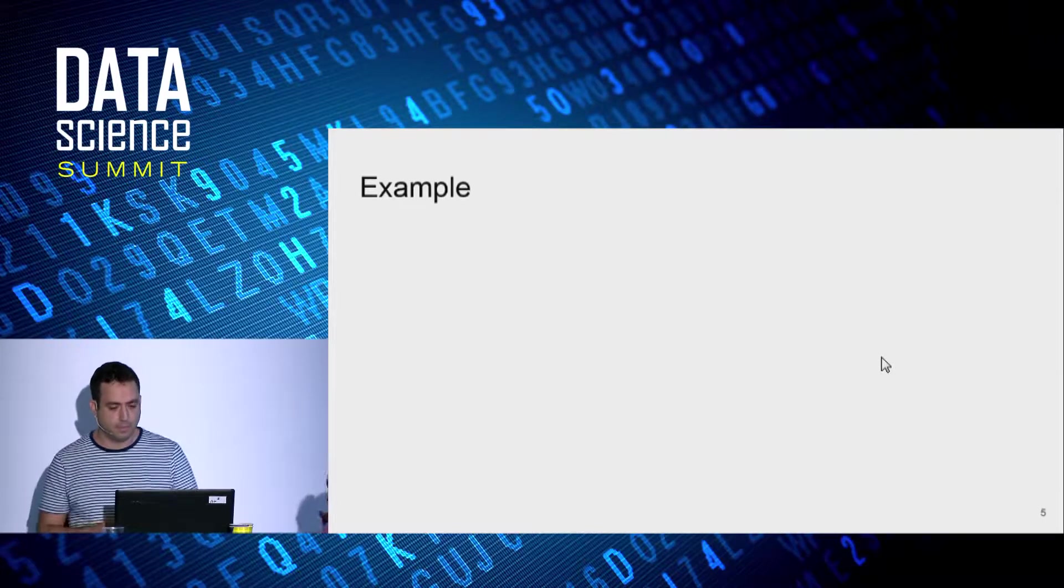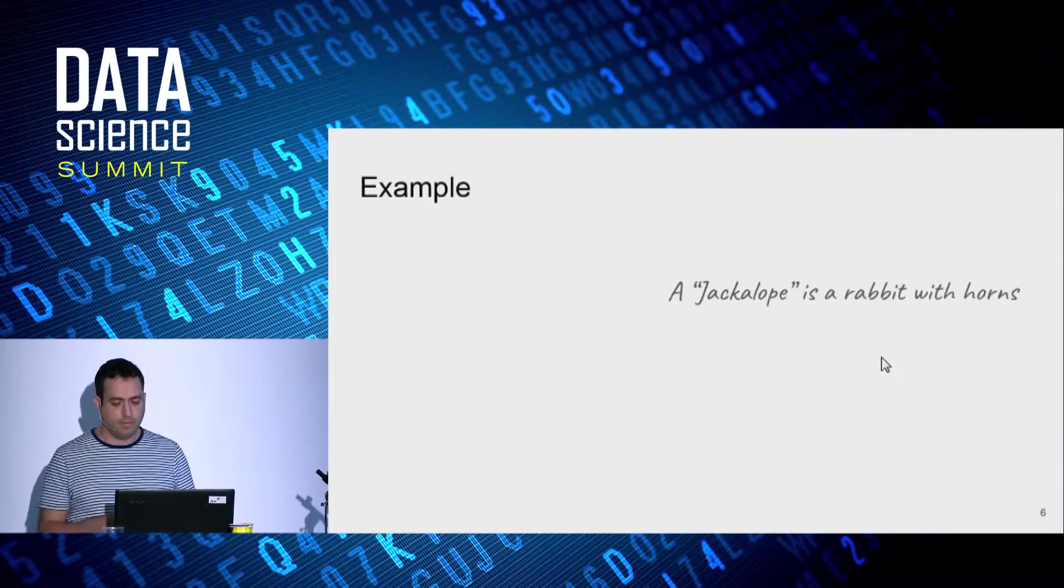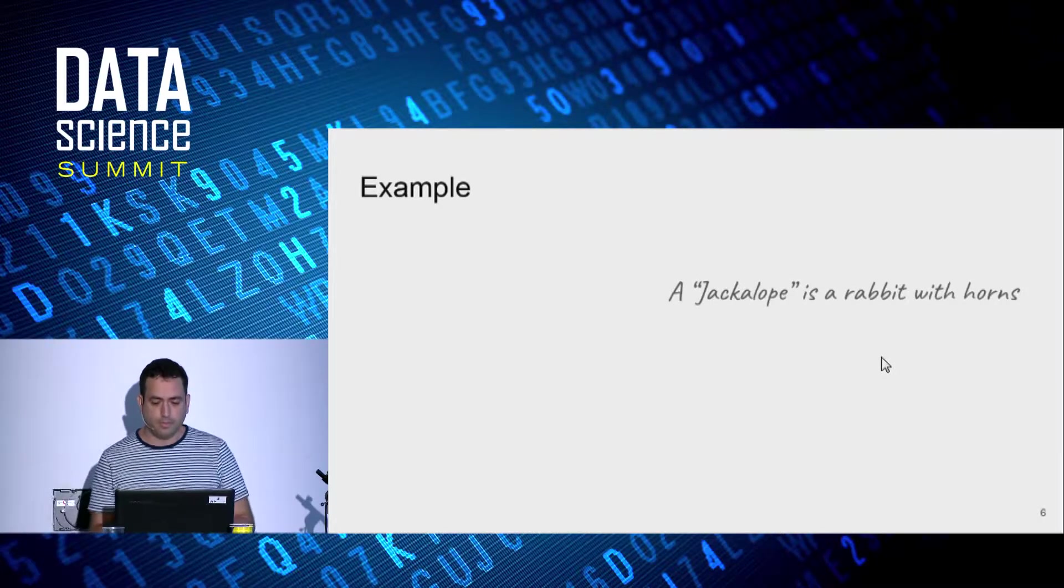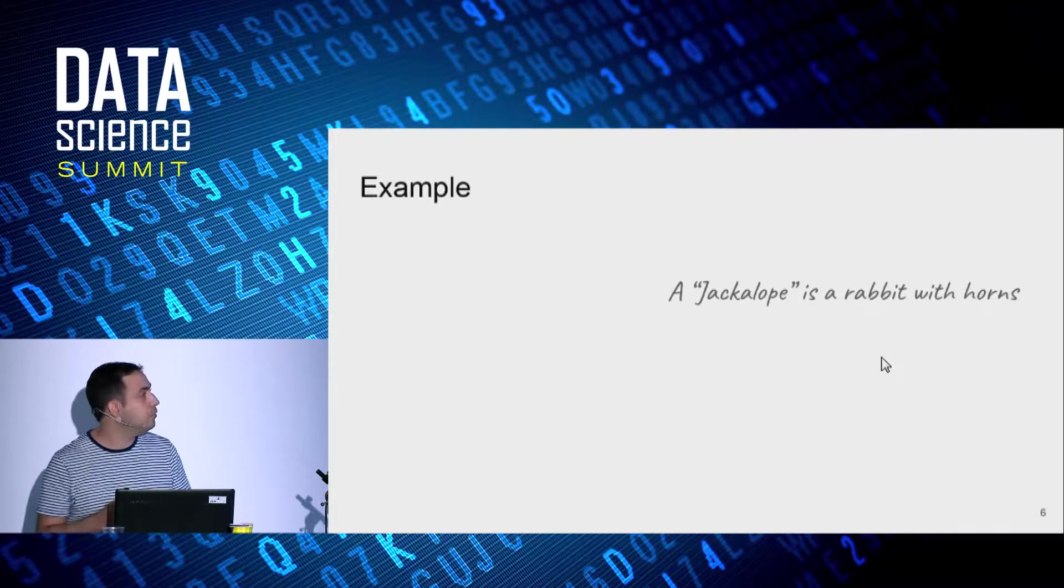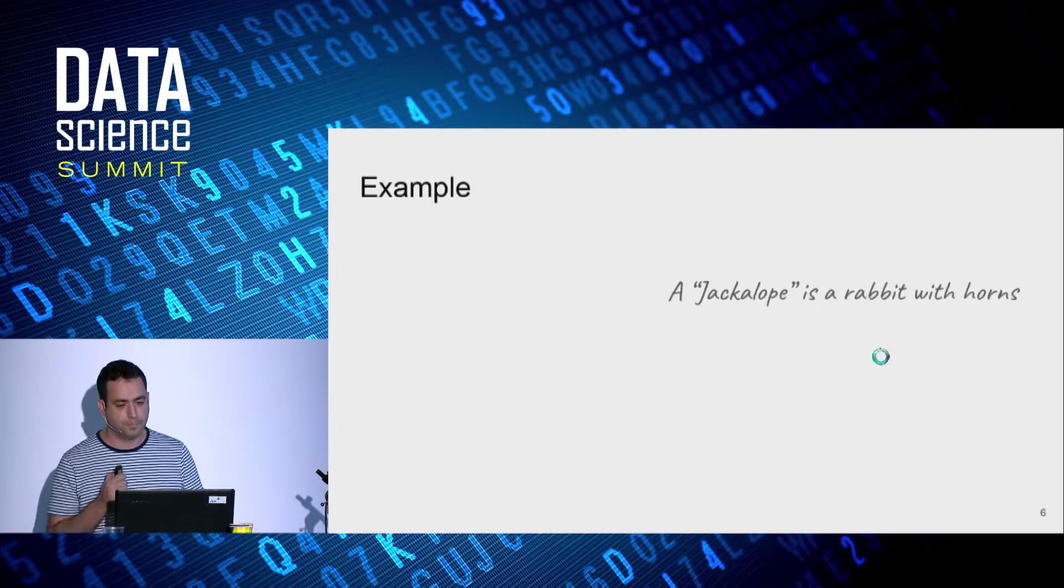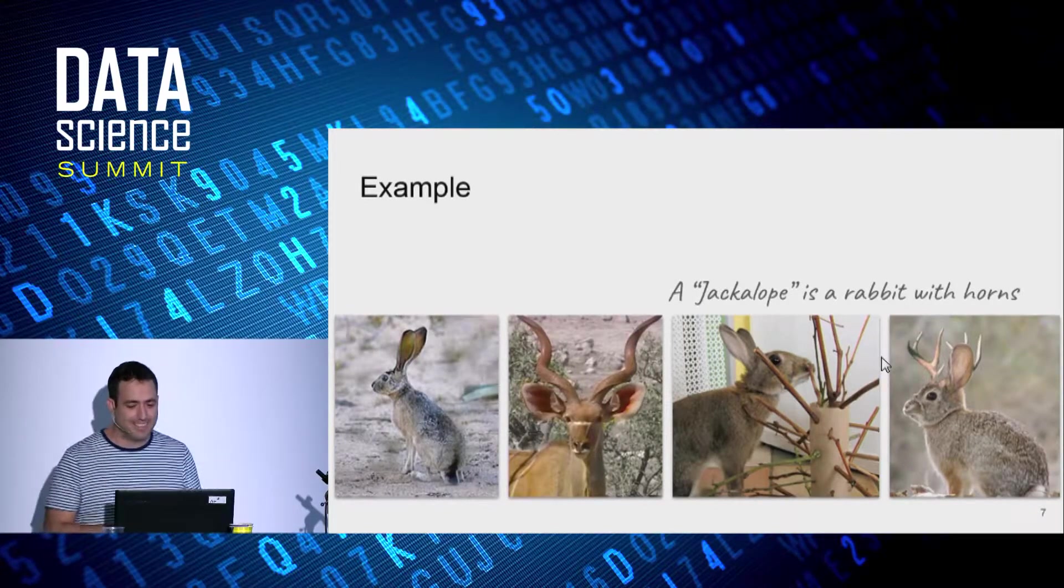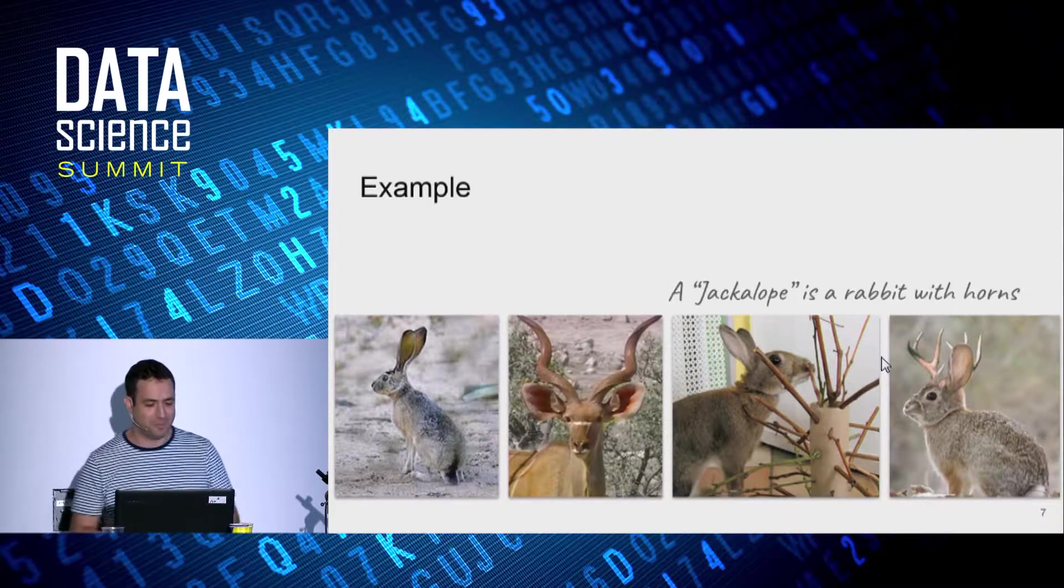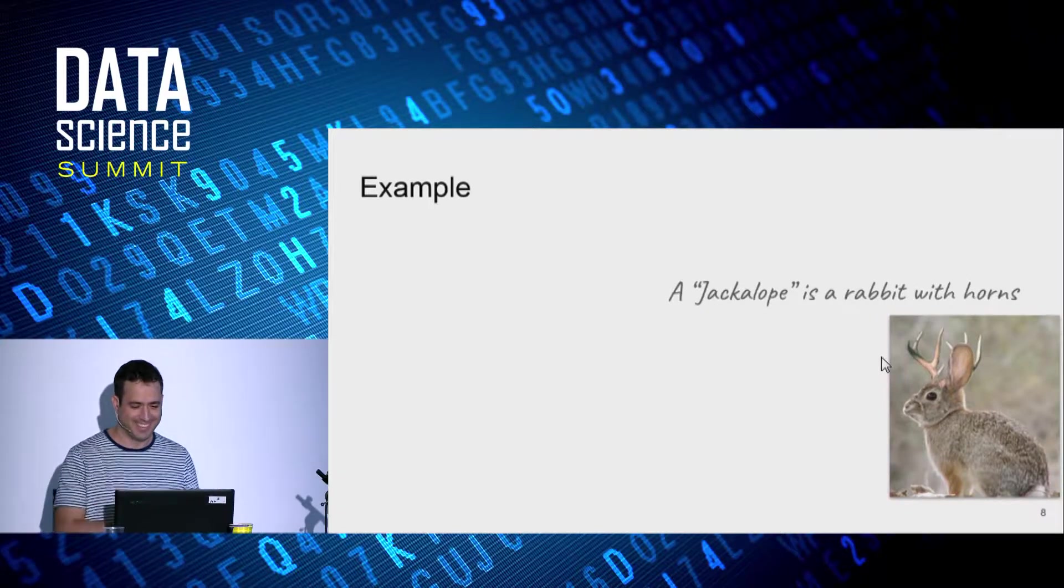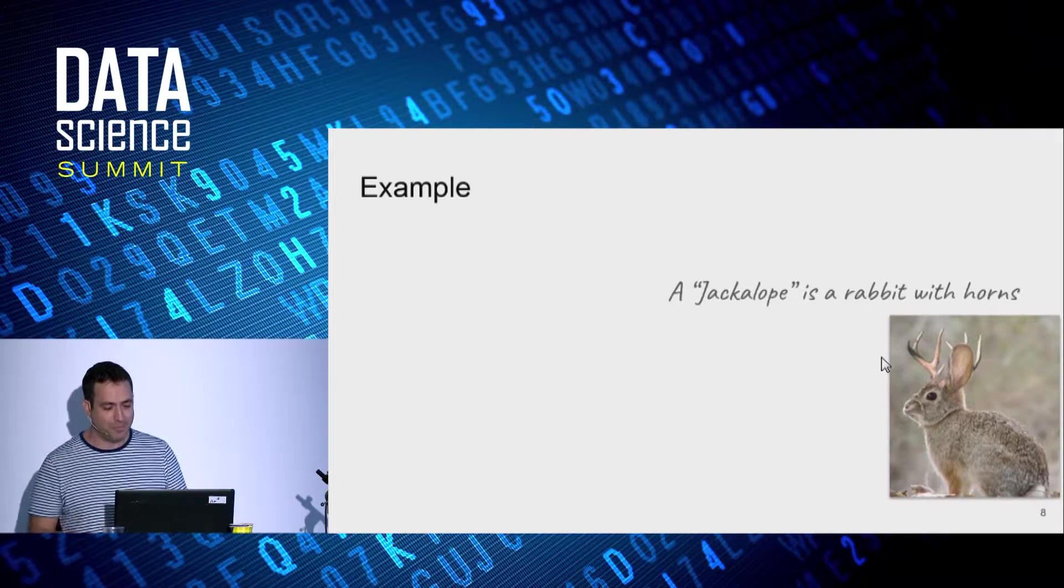Let's take an example. So you've probably never seen a jackalope in your life, and I'm telling you that a jackalope is a rabbit that has horns. Would you be able to tell which of the following images is a jackalope? Let's take a moment to tell which image is a jackalope.